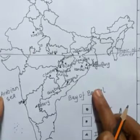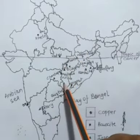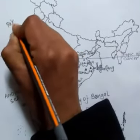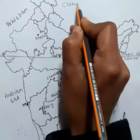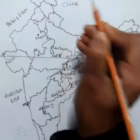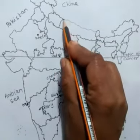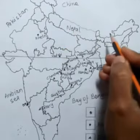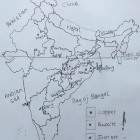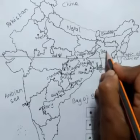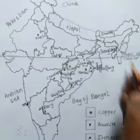After marking water bodies, let's mark the neighboring countries. To the northwest we have Pakistan, then China, Nepal, Bhutan, Bangladesh, and Myanmar. You have already studied these in your previous class.